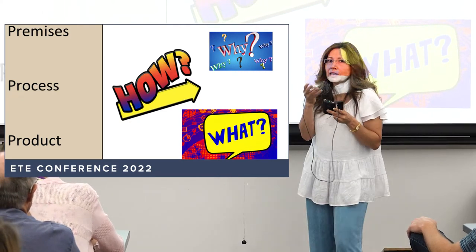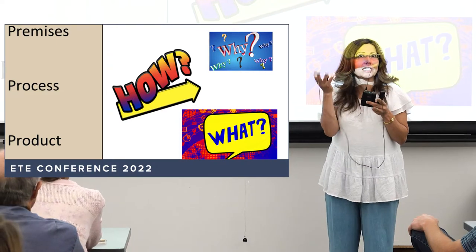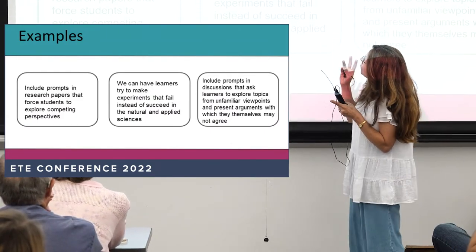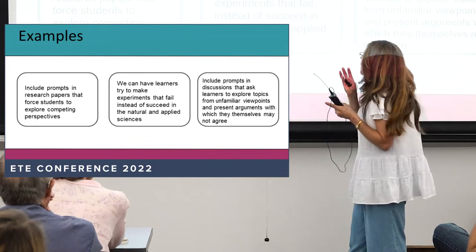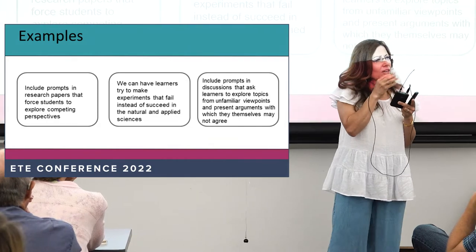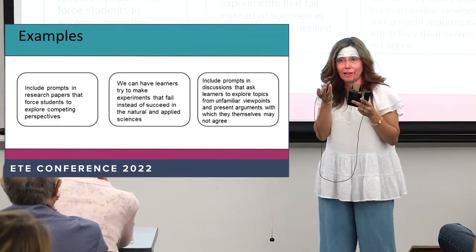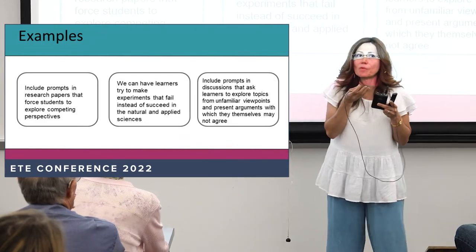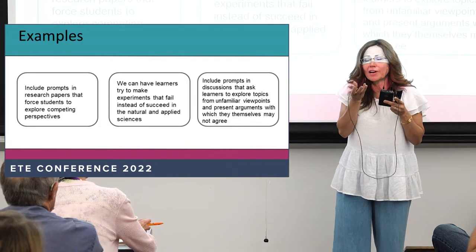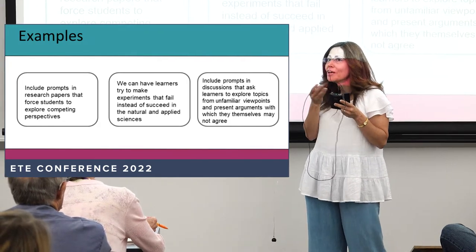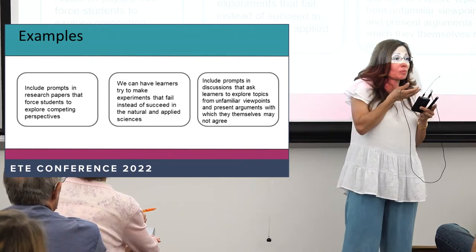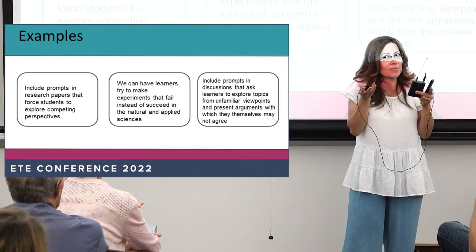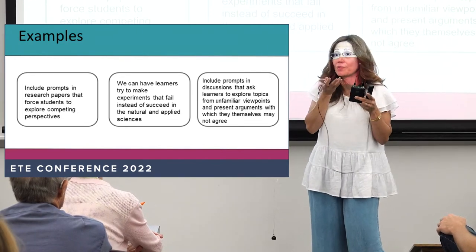We can have learners try to make experiments that fail instead of succeed in the natural and applied sciences. If it's not easy to design such an experiment, an alternative is to look at a case study in which an experiment has failed. For example, in finance, in the 1930s the Federal Housing Administration implemented policies supposedly to increase home ownership, but what it actually did was promote redlining — also known as discrimination in lending. You can ask a student: what happened here? What were the premises? What did the policymaker assume? How did they come to the conclusion that this would be a successful policy?